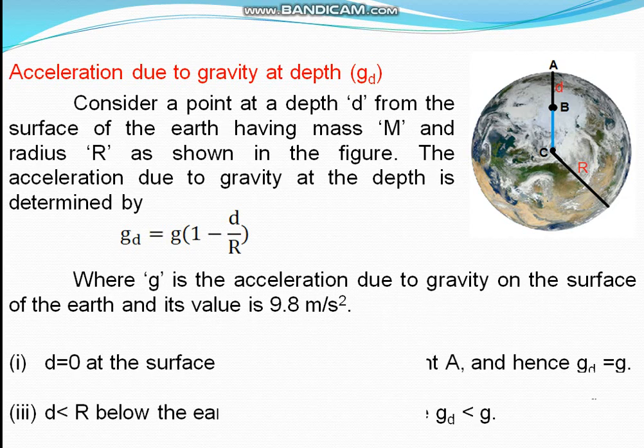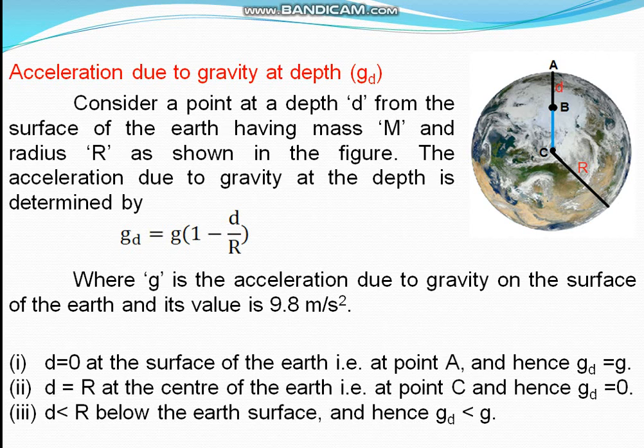Let's verify the formula. If point B is at the surface, depth d equals 0, so d/R equals 0, and 1 minus 0 equals 1, giving g-d equals g. If we move point B to center C, then d equals R, so d/R equals 1 and 1 minus 1 equals 0, giving g-d equals 0. For any point between the surface and center, d is less than R, and simple calculation gives g-d less than g.